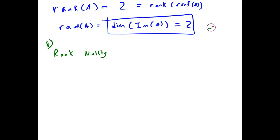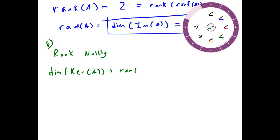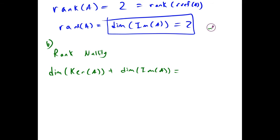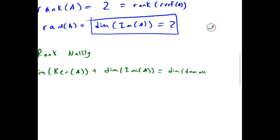This tells us that the dimension of the kernel, the nullity of A, plus the rank of A, which also happens to be the dimension of the image, equals the dimension of the domain space of the matrix.